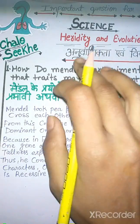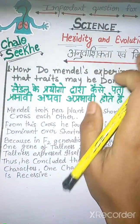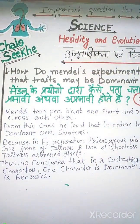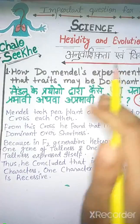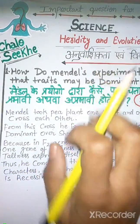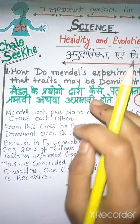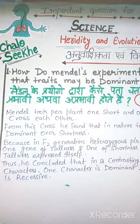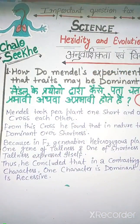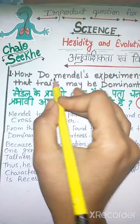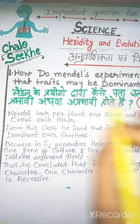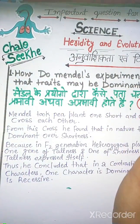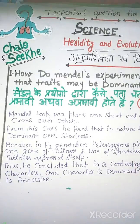Today we are doing important questions for heredity and evolution. These topics are related to heredity and evolution and are basically repeated in exams. The first question is: how do Mendel's experiments show that traits may be dominant or recessive?